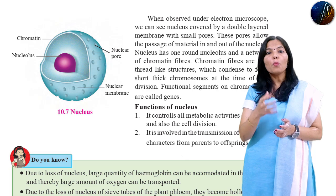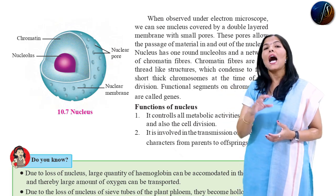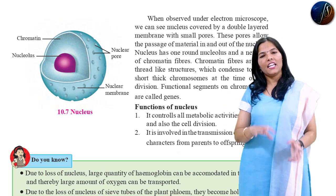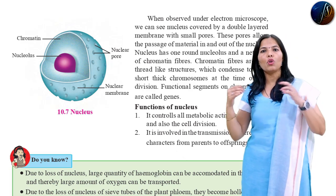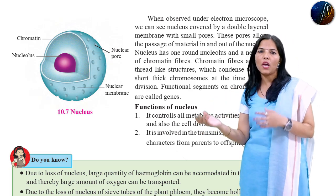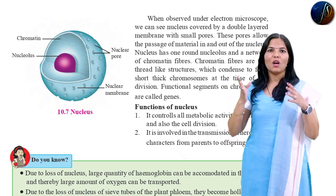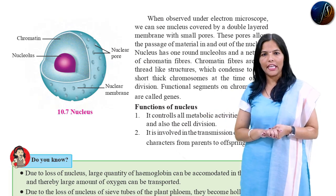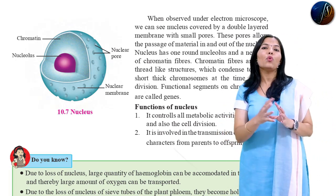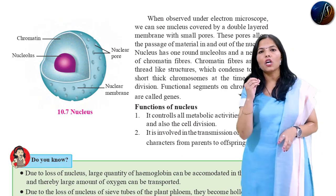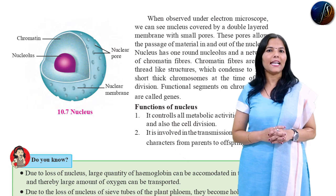Functional segments on a chromosome are called genes. Genes are present in your DNA. This DNA transmits the hereditary characters from parents to offspring. That is why children resemble their parents - just due to this DNA. The nucleus controls all the metabolic activities of the cell and also causes cell division.